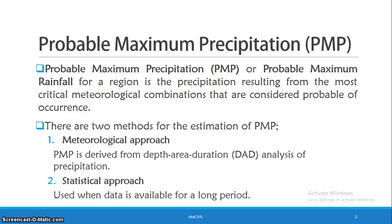There is no precipitation that will exceed the most critical meteorological factors. These material factors include humidity and temperature.